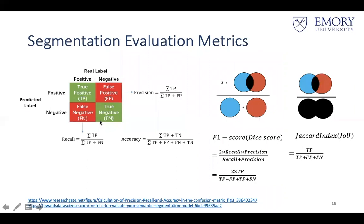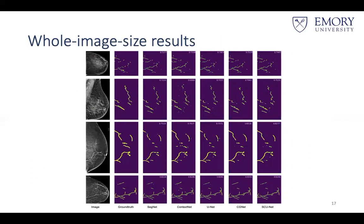A question was raised about how patch-wise segmentations are combined into the whole image. When cropping, the top-left and bottom-right corner positions of each patch are stored as location information. For overlapping regions, the prediction with the highest probability is adopted.